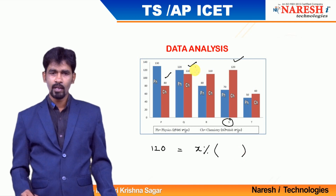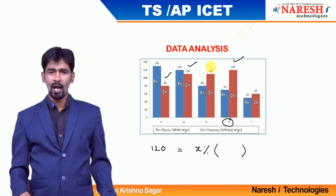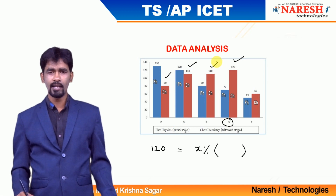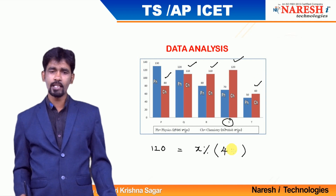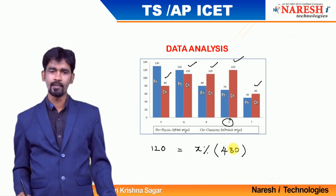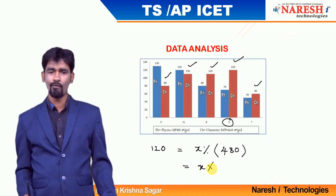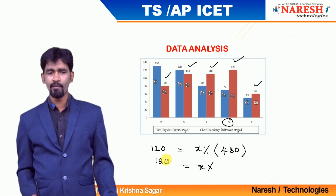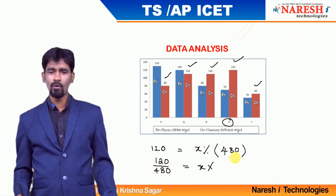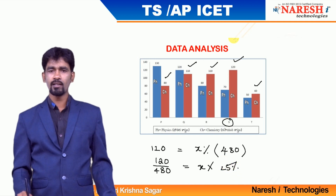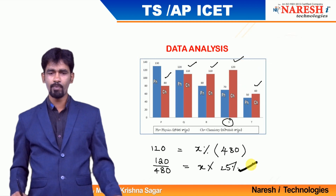Adding chemistry scores: P=80, Q=110 → 190; plus R=110 → 300; plus S=120 → 420; plus T=80 → total is 480. X% = 120/480 = 1/4 = 25%. So the marks obtained by S in chemistry, compared to the total marks, is 25%.